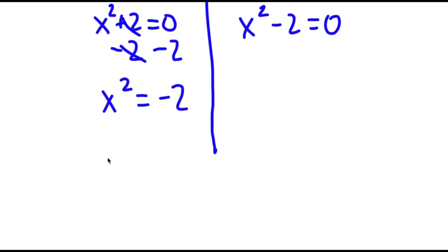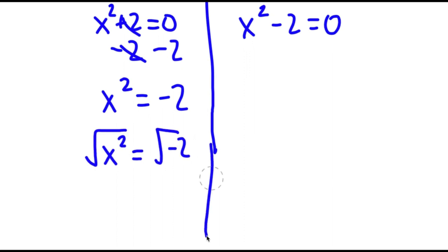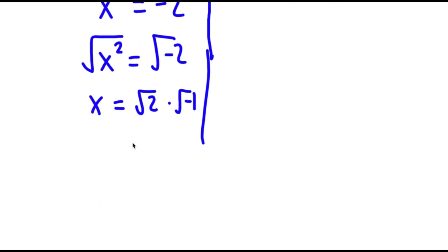To solve this, I'm going to take the square root on both sides. The square root of x squared is x, and the square root of negative 2 is the square root of 2 times the square root of negative 1. The square root of negative 1 is equal to i. So I have x is equal to positive or negative the square root of 2 times i.